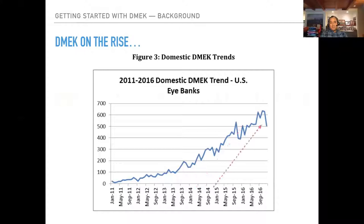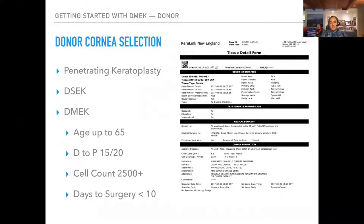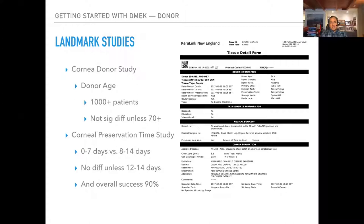That huge increase is mostly due to preparation of the donor at the eye bank. Before 2012 it was under 100 per month; now we're about 500 to 600 a month. For donor selection in DMEK, you want slightly older corneas — age 45 to 65 — because they're easier to manipulate during surgery, less adherent to the underlying posterior stroma, and easier to unroll in the eye. Other characteristics like cell count and death-to-preservation time are similar to DSAEK.